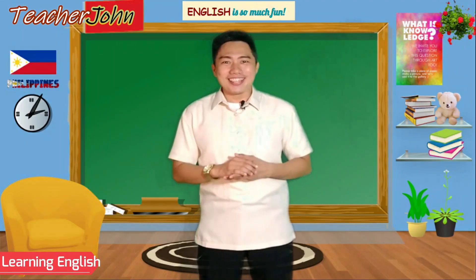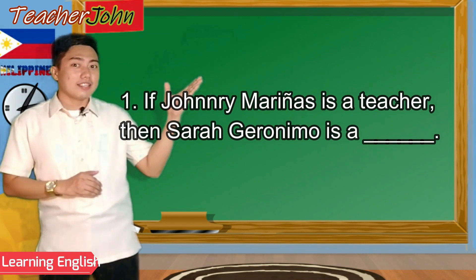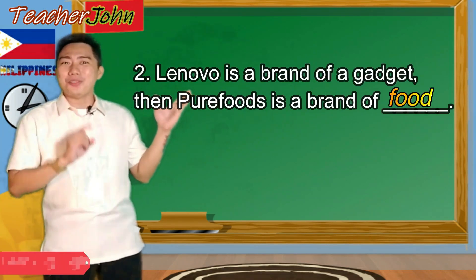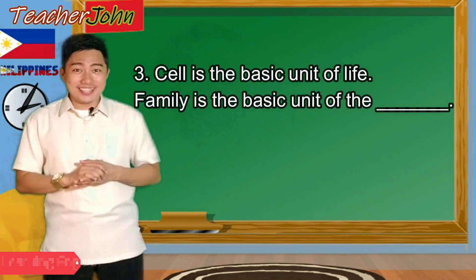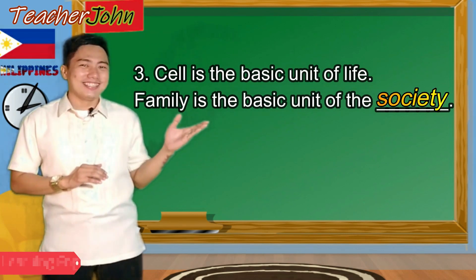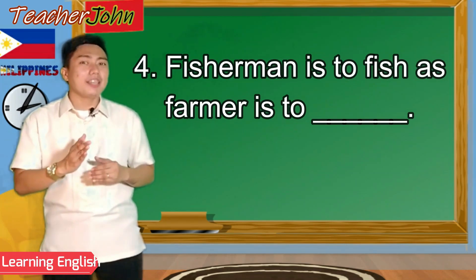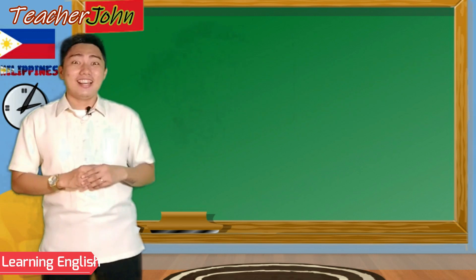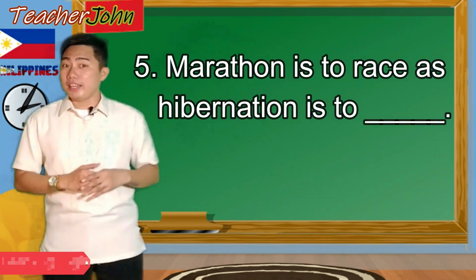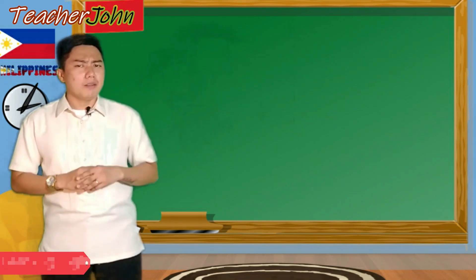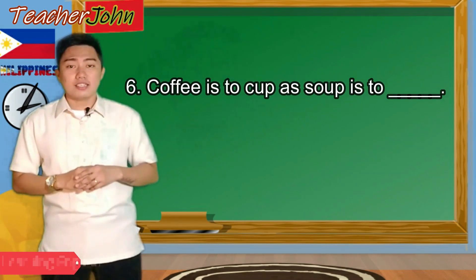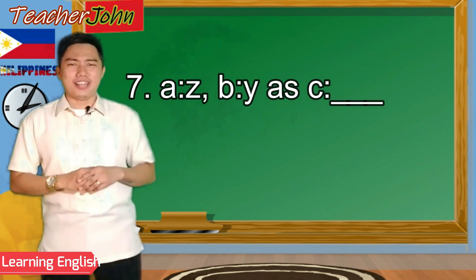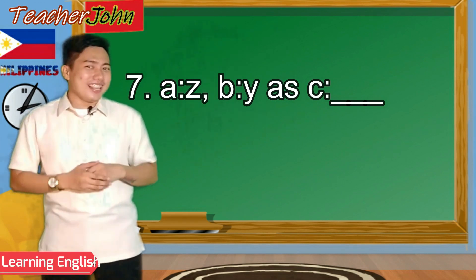Let us check if your answers are correct. In this item, the answer is... Next one, the answer is... The third item, the answer is... Let's advance to the fourth item — the answer is... Yes, it's farm. Let's have the fifth one. The answer in the fifth item is sleep. You are right. Number six, the answer is both. And the seventh one — you surely are correct — the answer is letter X.